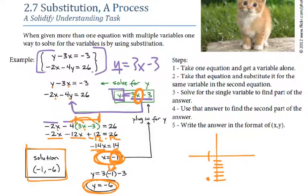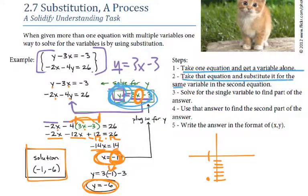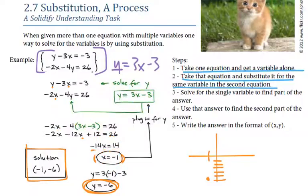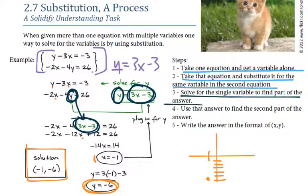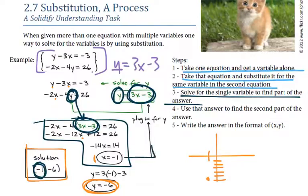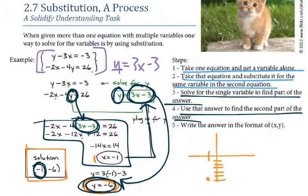So when we're dealing with substitution, the first step is we need to get one equation to have one variable alone. Sometimes this is already done, sometimes we've got to do it. Once we've got it equal to a variable, we're going to take that equation and substitute it for the same variable in the second equation. Then we solve. They did all this work and got one variable — that was half of our answer. Then we use that answer, plug it back into that other equation, which gives us the second part of our answer. Then we write it down as a point.